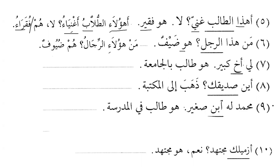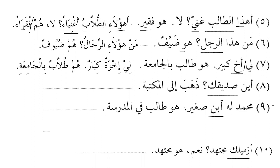'I have an older brother; he is a student in the university.' Now we want to say: 'I have elder brothers; they are students in the university.' So ابن changes to أبناء, صغير changes to صغار or similar, and هو changes to هم, making all elements plural.